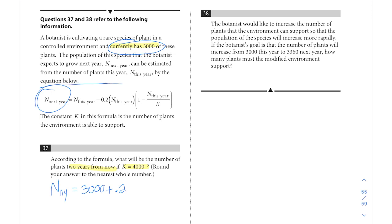It's 3,000 plus 0.2, and we're just following along with this formula. 0.2 times this year, which is 3,000, times 1 minus this year, 3,000, over K, which for question 37 is 4,000. That's what we're plugging in here, and when we do the math on that, luckily it's a calculator section. Just for the sake of making sure we understand where these calculations come from, we're going to simplify piece by piece.